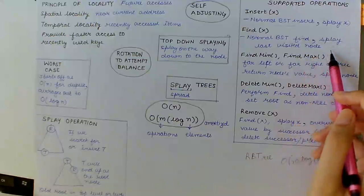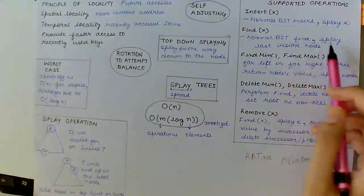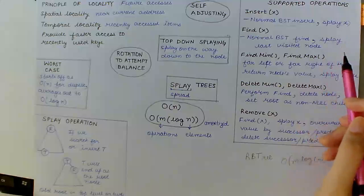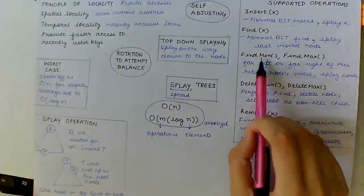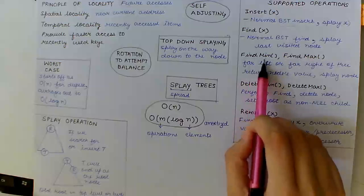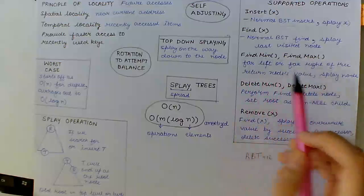In case of find operation, we attempt normal BST find and splay the last node visited. If X is in the tree, then we splay X. If it is not in the tree, we splay the leaf node where our search ended.